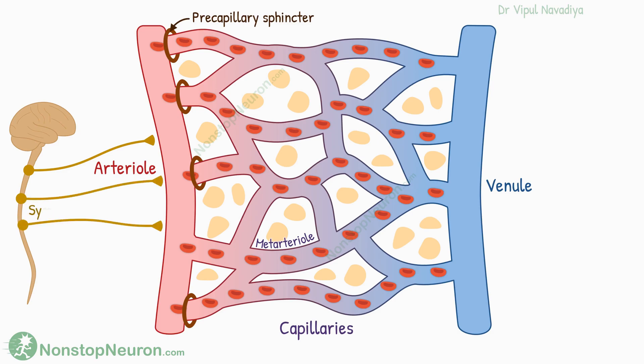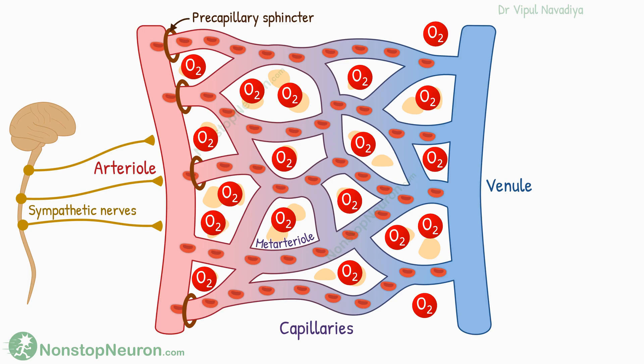Among all these, a special thing about the arteriole is that it receives innervation. On the other hand, the precapillary sphincter and metarteriole do not receive innervation. So the only regulator of their activity is a local condition.